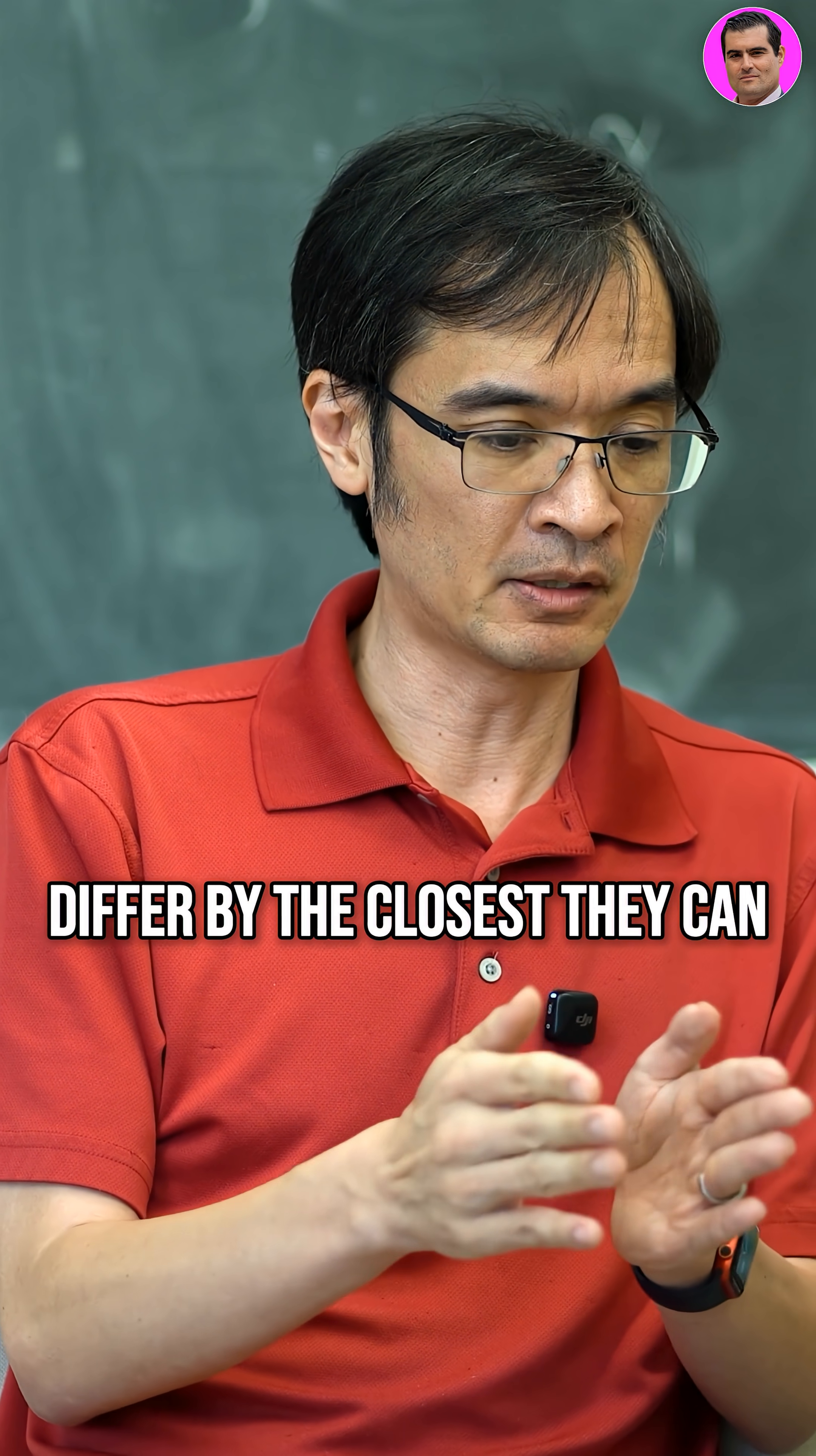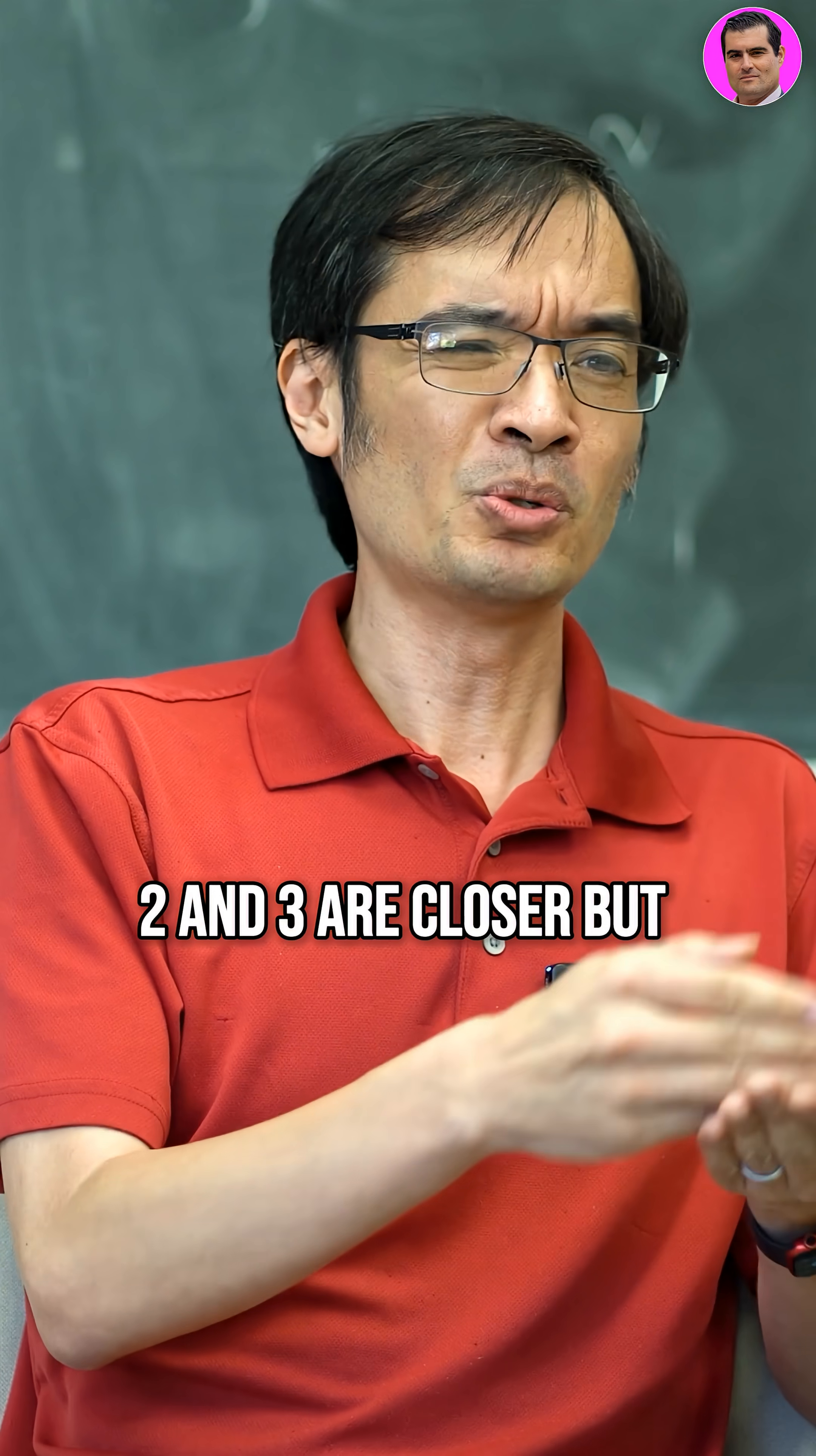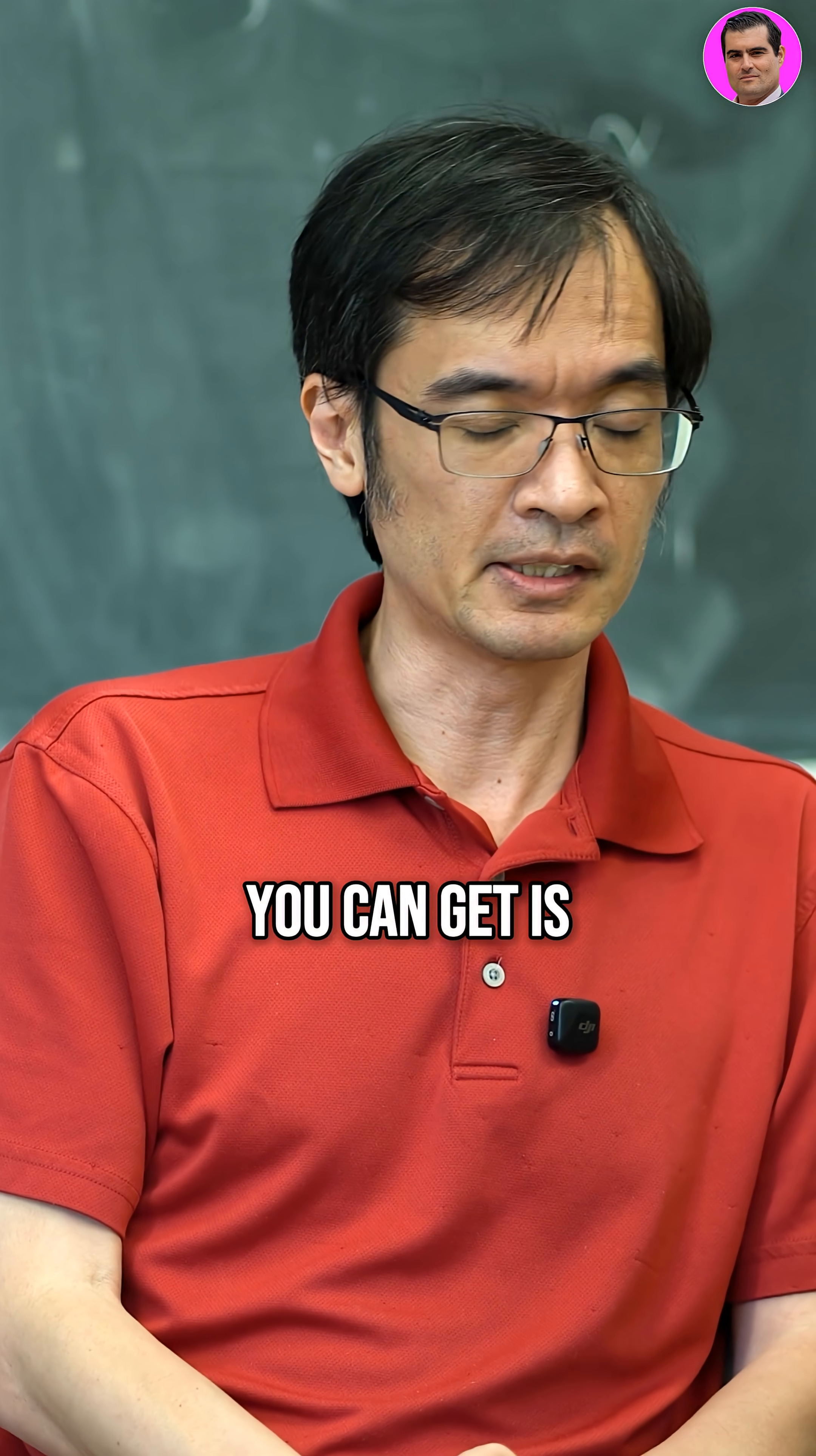So these are pairs of primes that differ by the closest they can, which is 2. For example, 11 and 13. Well, okay, 2 and 3 are closer, but after 2, all primes are odd. So the closest you can get is 2.